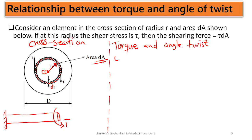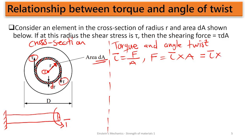We know that shear stress is just the shear force over the shear area. Looking at this small portion, it is also undergoing some shear stress. The shear stress that this small portion is undergoing is still given by the formula: shear force over that small area we are considering. Therefore, the shear force causing shear in that small portion is going to be the shear stress multiplied by the area — specifically the small area dA.